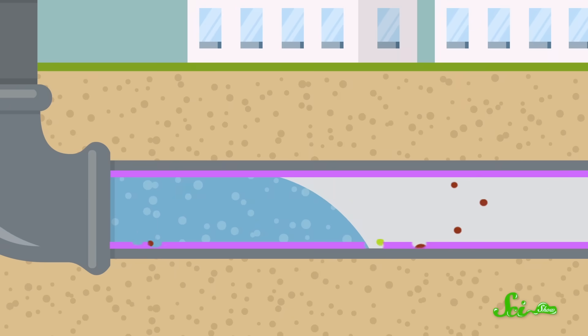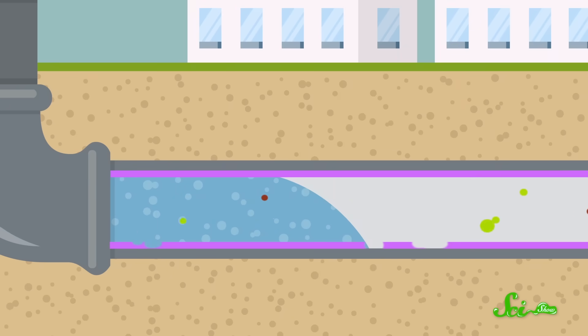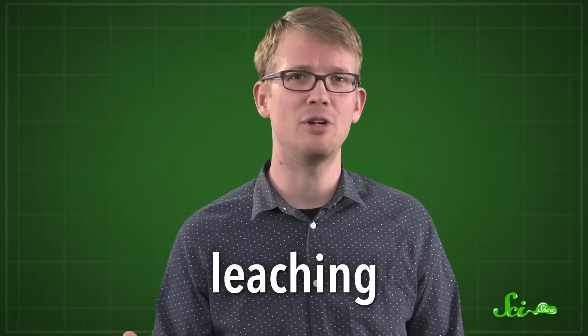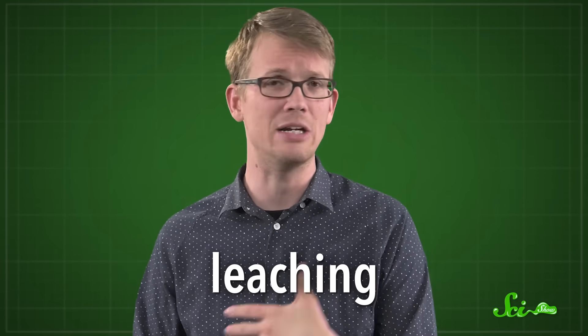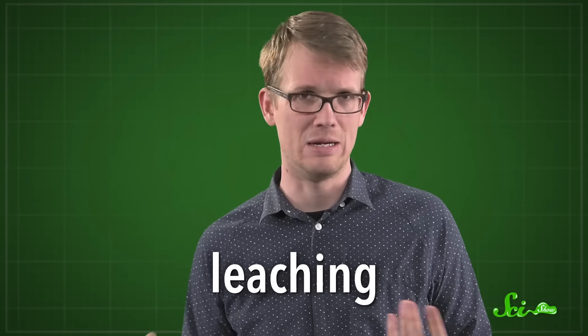If that layer is patchy or missing, then electron-stealing chemicals called oxidants, like dissolved oxygen gas, can react with the lead. And when that happens, the lead will dissolve into the water and contaminate it. You've probably heard of that, it's known as leeching. And it's when things get dangerous for people who need this water to drink or shower or do anything with on their bodies.